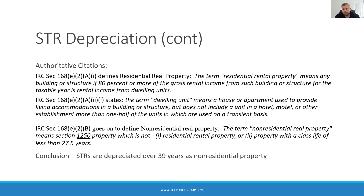The first citation from Section 168 defines residential real property as any building or structure if 80% or more of the gross rental income from such building or structure for the taxable year is rental income from dwelling units. A citation right after that, still under Section 168, says the term dwelling unit means a house or apartment used to provide living accommodations in a building or structure, but does not include a unit in a hotel, motel, or other establishment where more than one half of the units are used on a transient basis. The last citation defines non-residential real property as any Section 1250 property which is not residential rental property or property with a class life of less than 27 and a half years — meaning your building that is not residential property will be considered non-residential property.